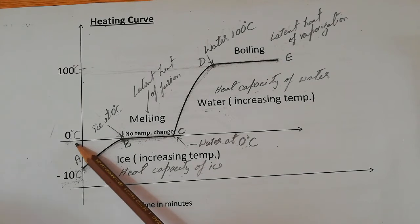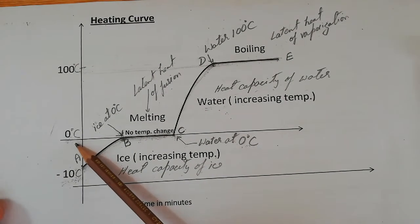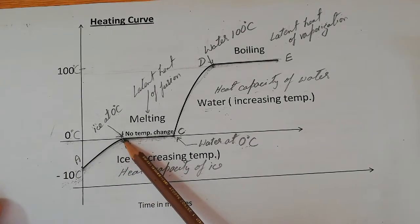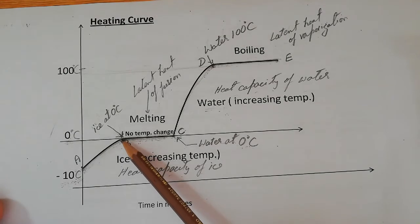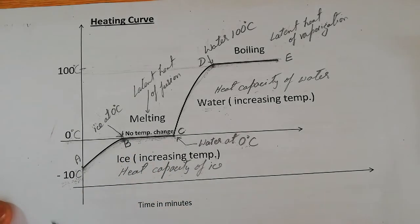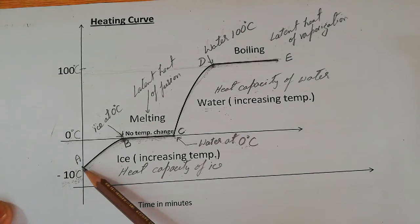The same temperature is for the freezing of ice, so we can say that the freezing point or the melting point of ice is zero degrees Celsius. This point must be kept in mind: the melting point or freezing point of a substance is the same.